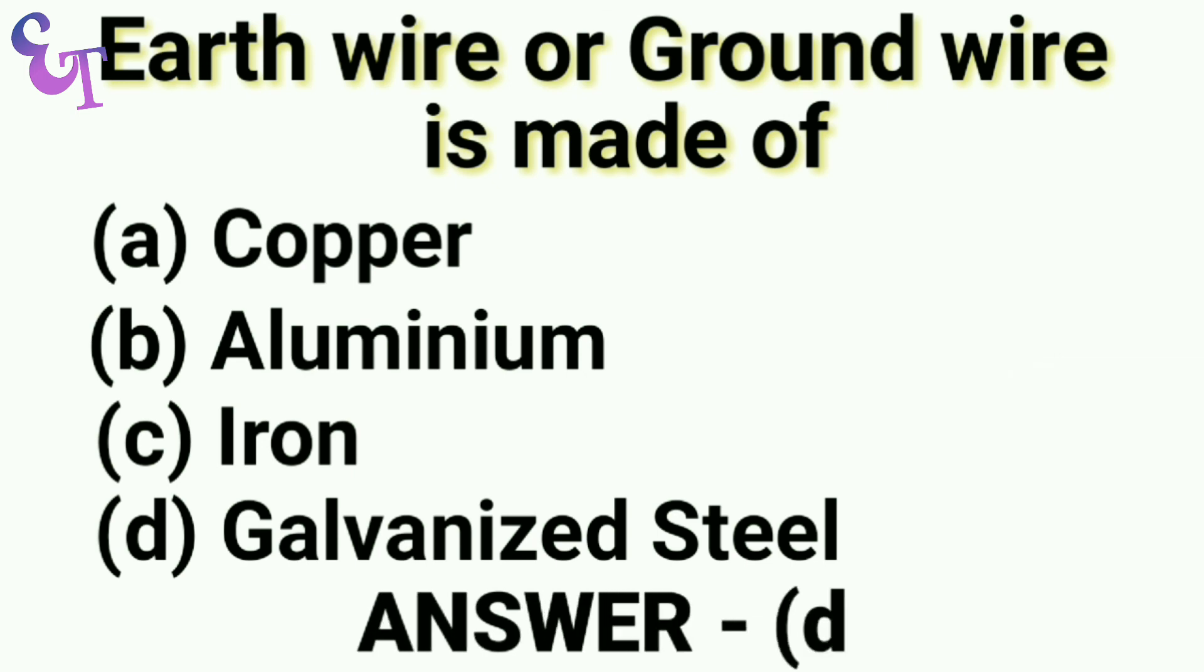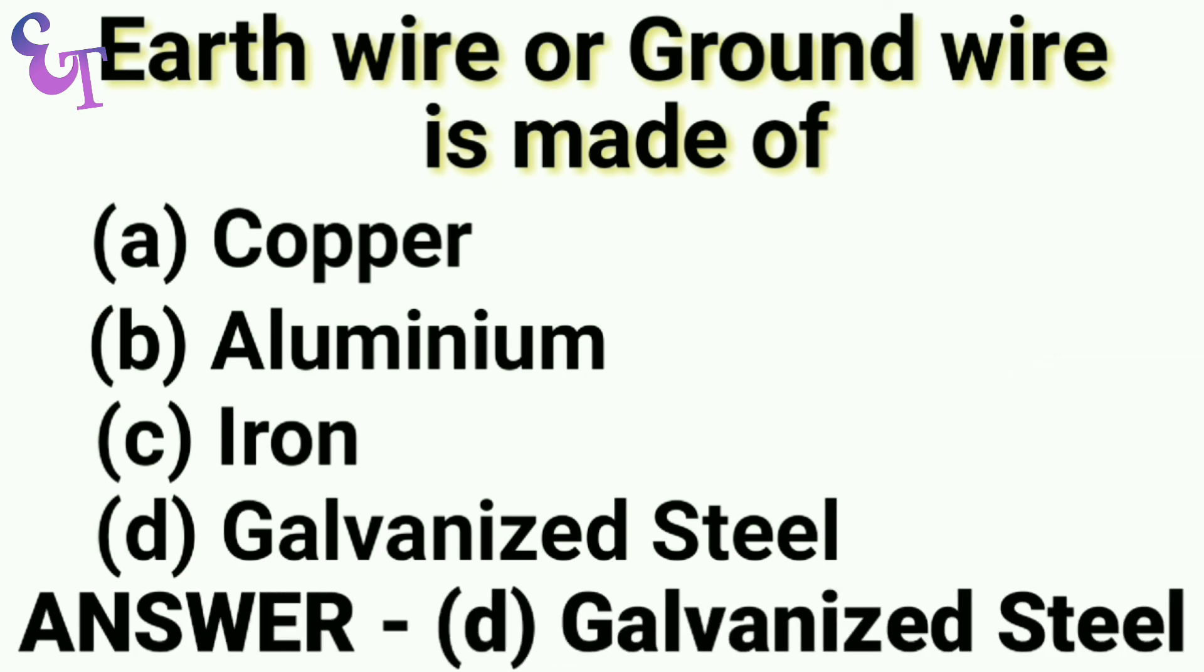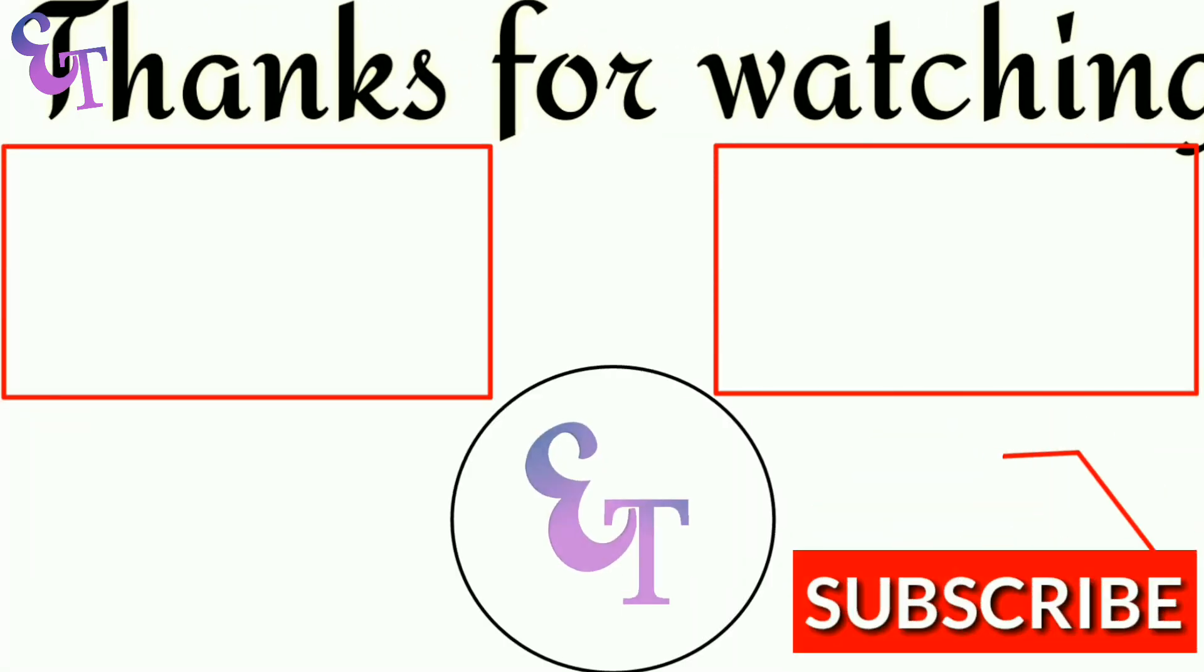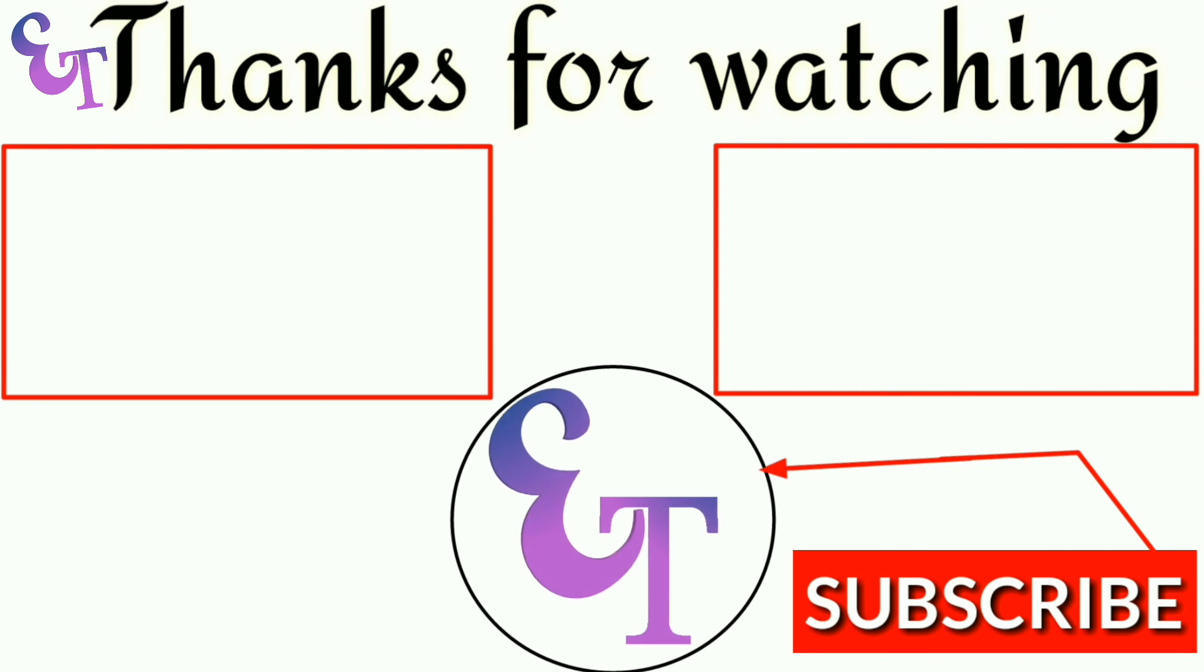Question number 10: Earth wire or ground wire is made of A. Copper, B. Aluminium, C. Iron, D. Galvanized steel. The right answer is D. Galvanized steel.